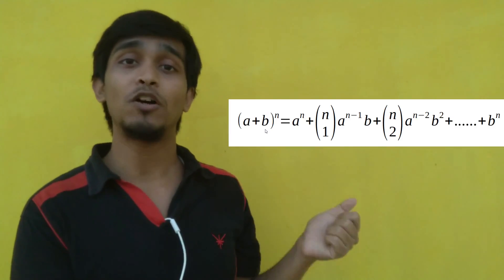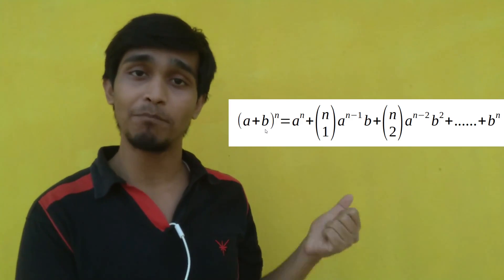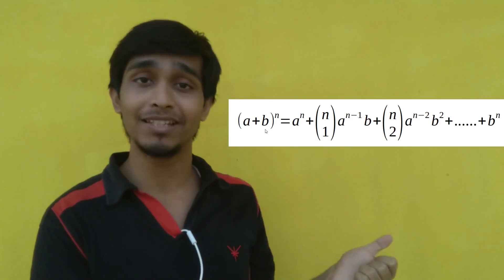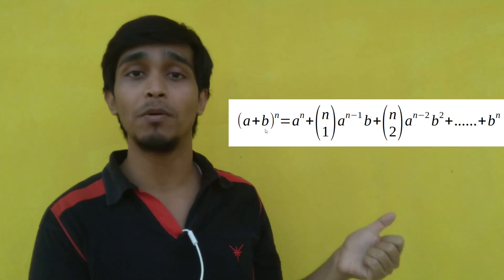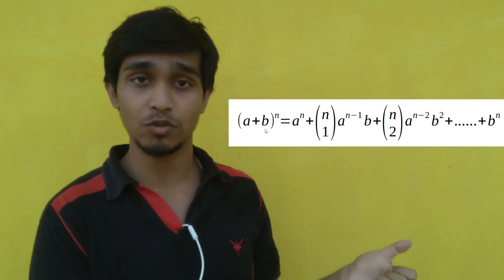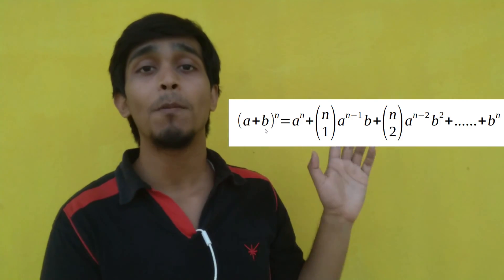The Binomial Expansion Theorem says: (a + b)^n equals a^n plus nC1·a^(n-1)·b plus nC2·a^(n-2)·b², and the sum continues up to b^n. In this theorem, the condition is that n is a positive integer.